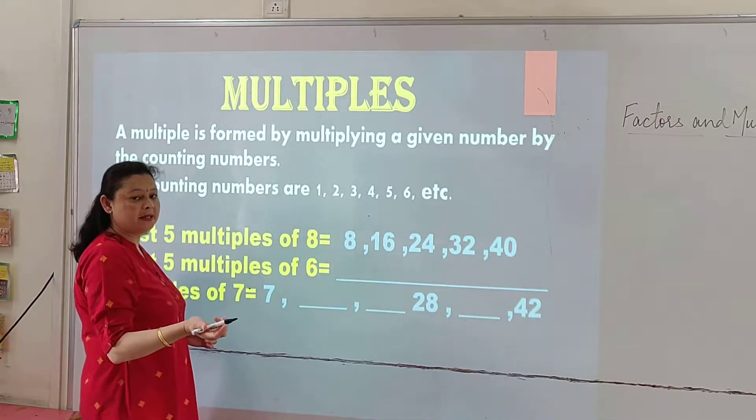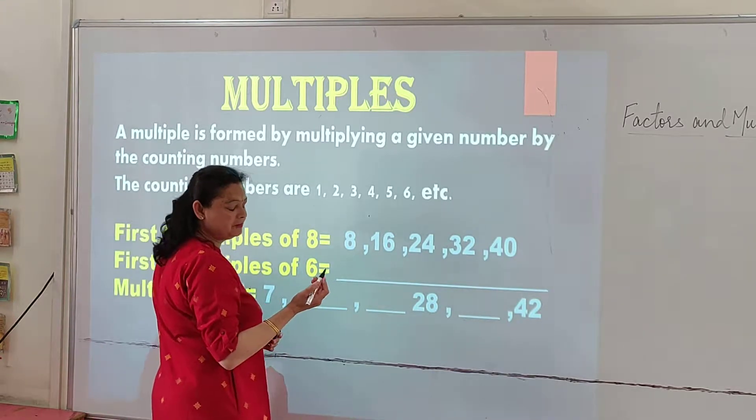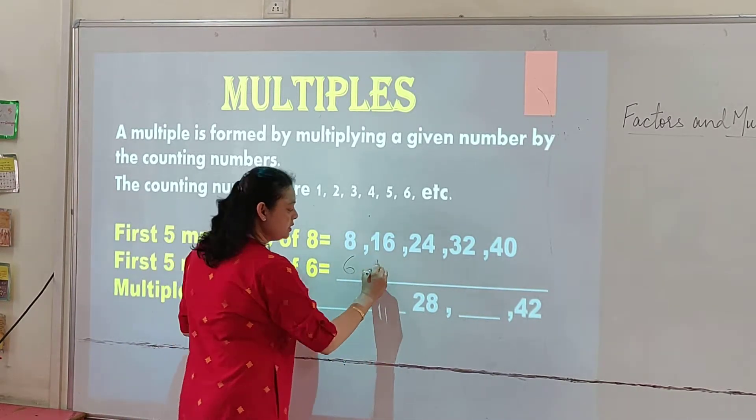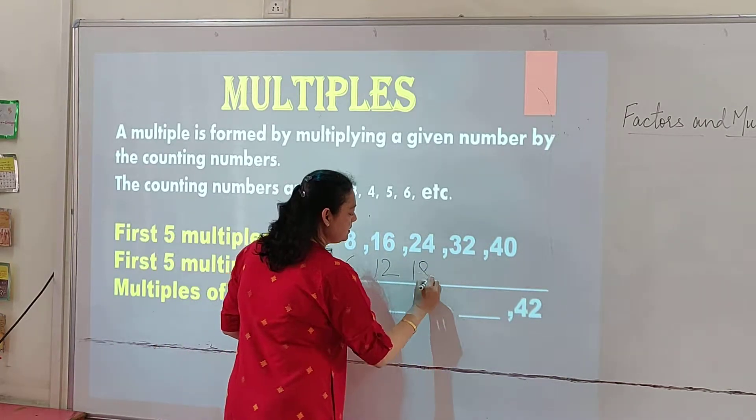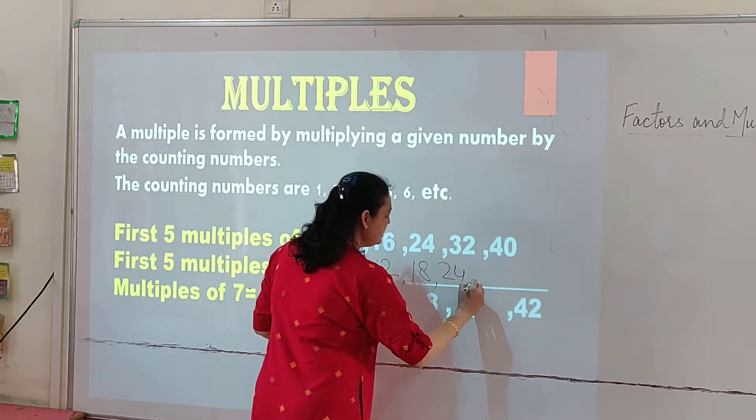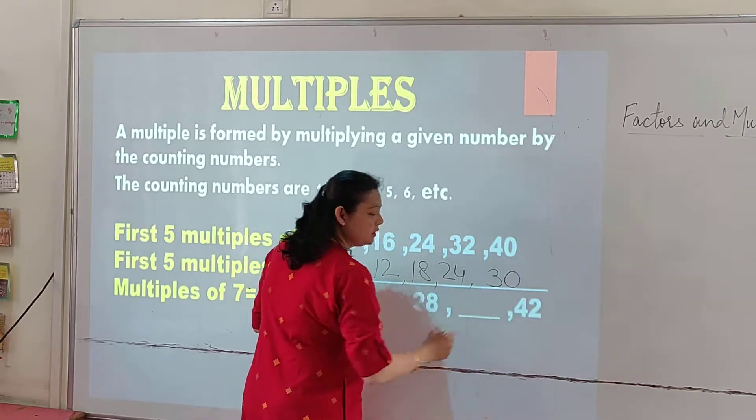Now for 6, what will be the next 5 multiples of 6? Multiples of 6 will be 6 times 1 is 6, 6 times 2 is 12, 6 times 3 is 18, 6 times 4 is 24, and 6 times 5 is 30. Got it?